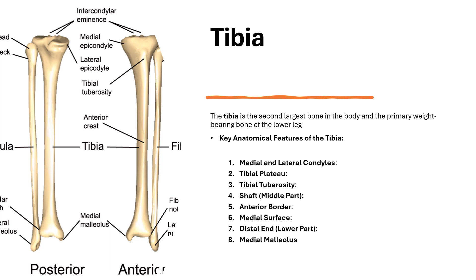At the distal end — the lower part of the tibia — we have the medial malleolus. This is the bony bump on the inside of the ankle, formed by the lower end of the tibia. The medial malleolus provides support for the ankle joint and is an important stabilizing structure during movement. Overall, the tibia plays a crucial role in weight bearing, absorbing and transmitting forces from the knee to the ankle, and maintaining stability during locomotion.